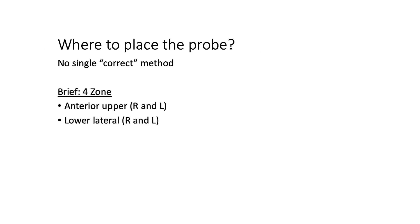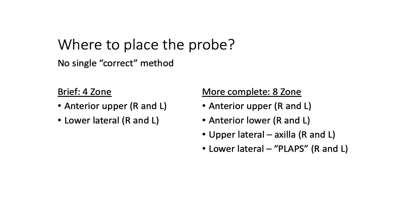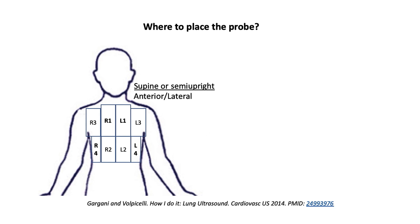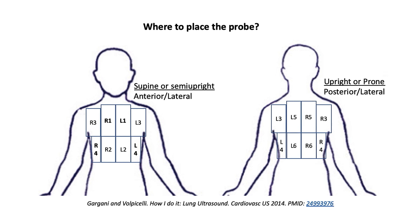Where do you place the probe? There's no single correct method. One option is the four-zone method: anterior upper and lower lateral on each side. Another option is the eight-zone method, with anterior upper, anterior lower, and then upper lateral and lower lateral on both sides. If your patient is upright or prone, you have additional posterior zones to choose from. Here's a schematic diagram. The brief protocol involves R1, R4, L1, and L4. The more complete version would be all eight of these zones.